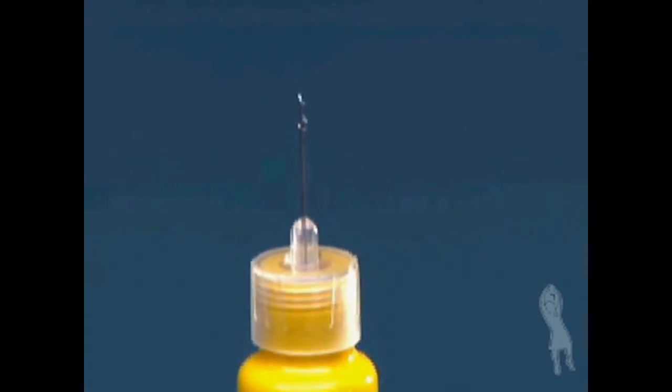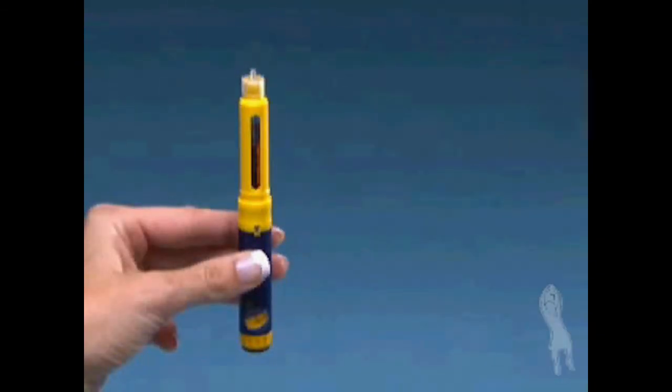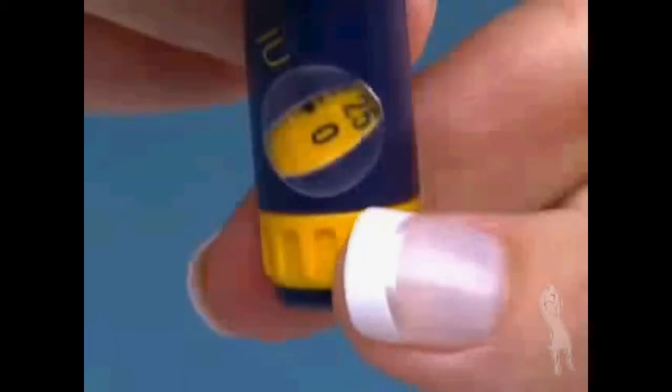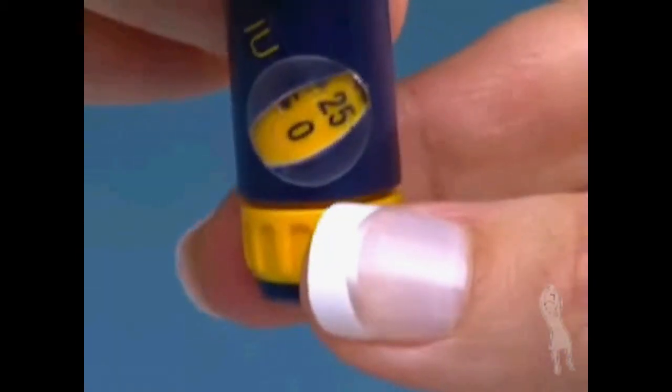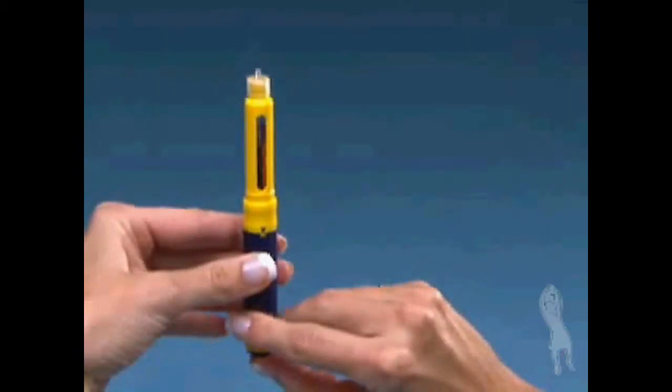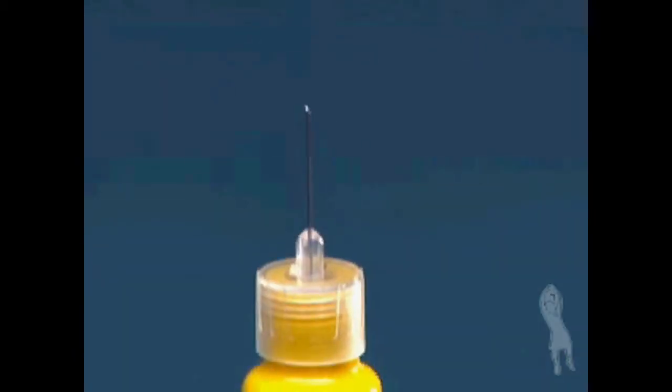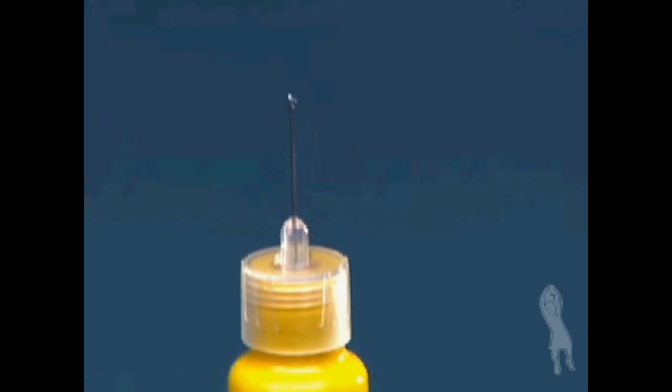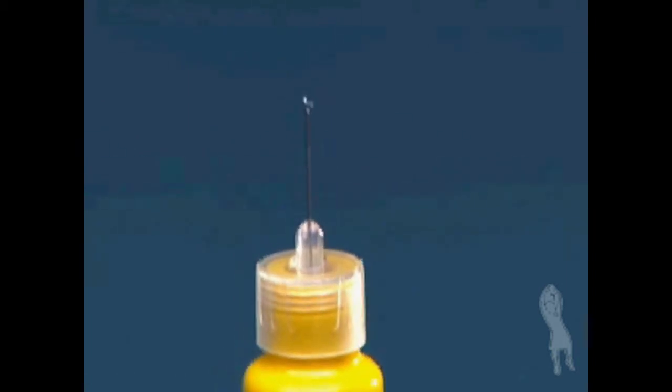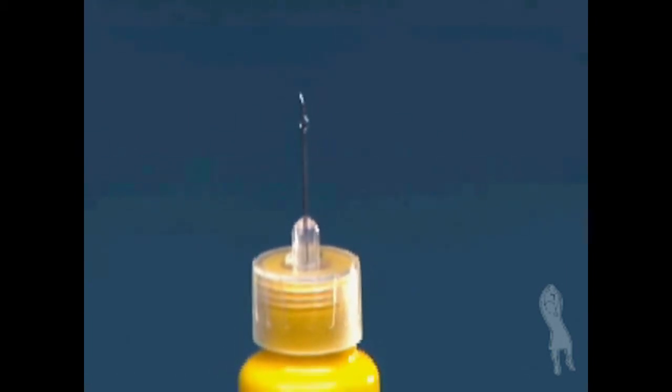If you do not see a droplet, continue with this step. If you did not see a droplet at the tip of the needle, dial the dosage knob until you hear one click. With the needle pointing upwards, push in the injection button. Look for the droplet. If you still did not see a droplet, repeat the previous step until you do. You must make sure you see a droplet or you may not inject the correct amount of medication.